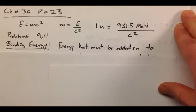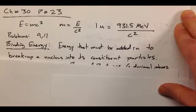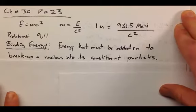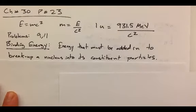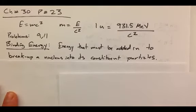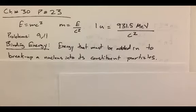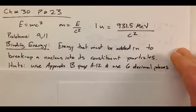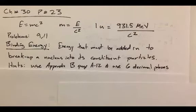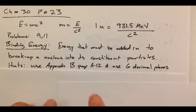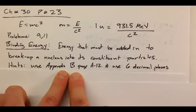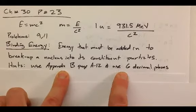So let's talk about your homework problems 9 and 11. And to do those two problems, you are going to have to know about binding energy. What is binding energy? Binding energy is the energy that must be added to break up a nucleus into its constituent particles. And to calculate this, you might want to look in your book in appendix B on page A12.